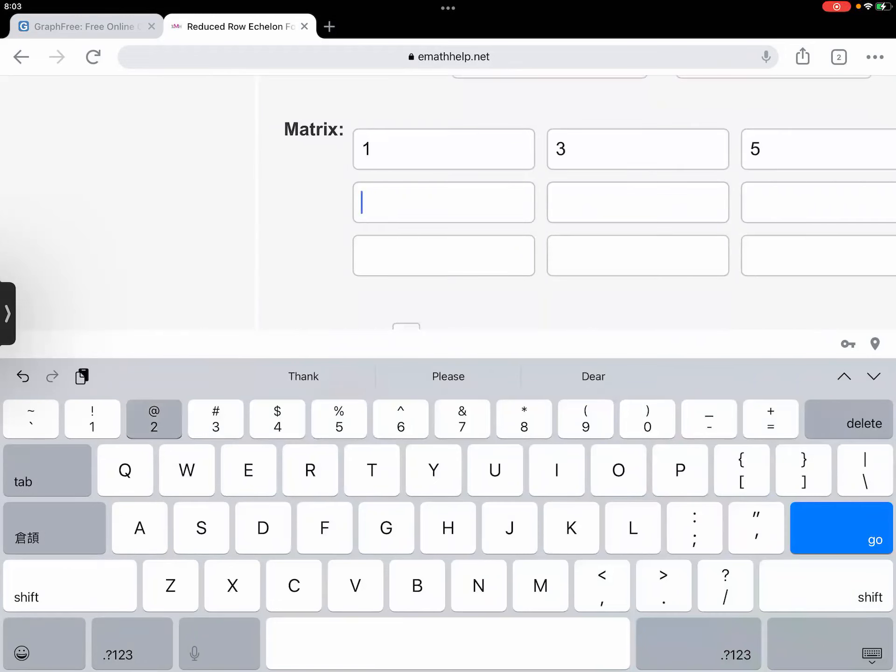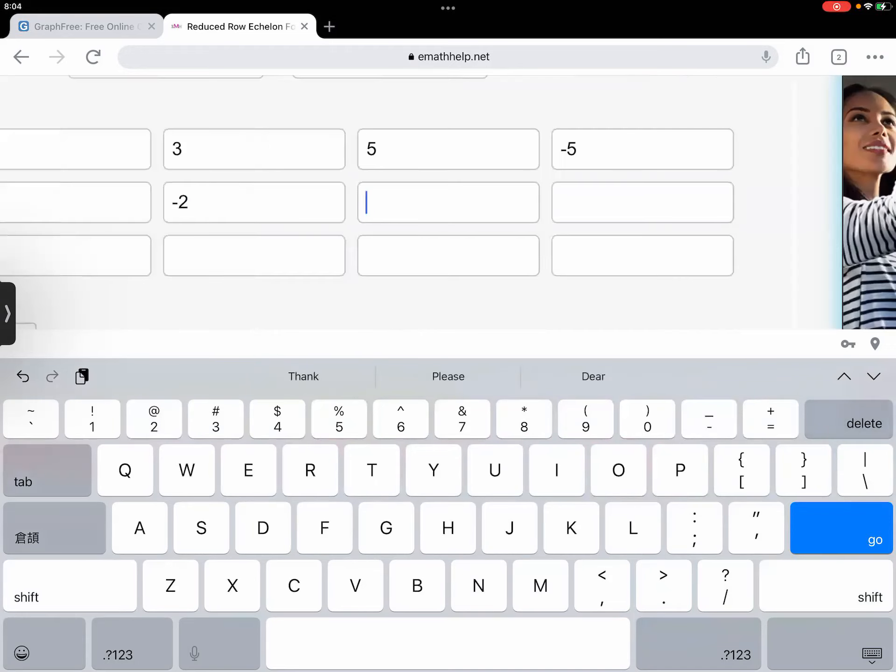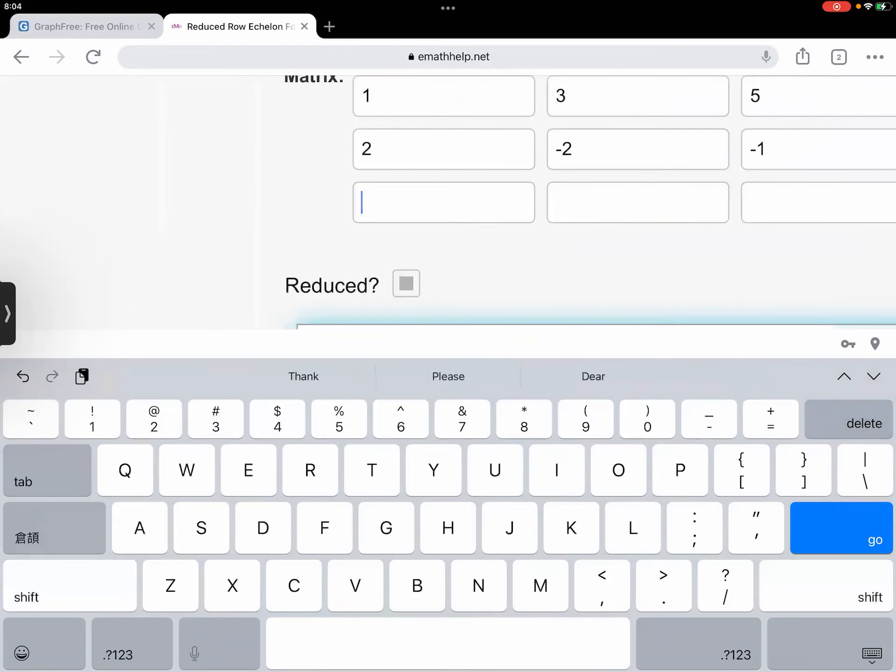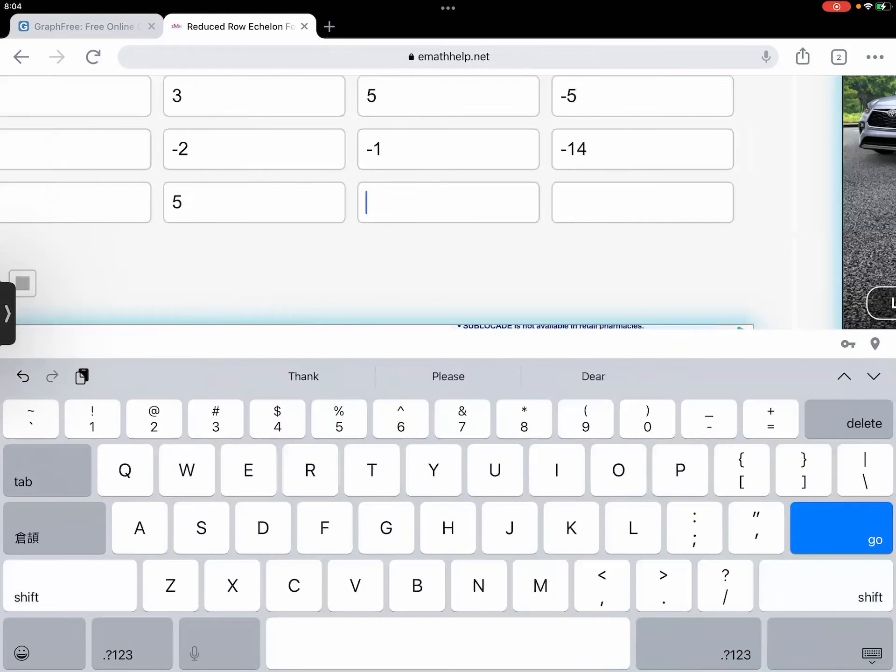And then we have two. We have negative two. Oops, negative two. And then we have negative one. And then we have negative 14. And then the next one would be one, and then five, and then four, and then 11.